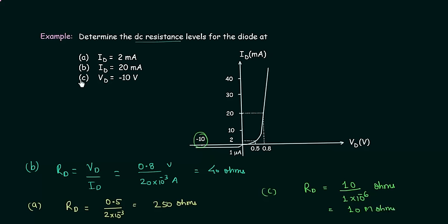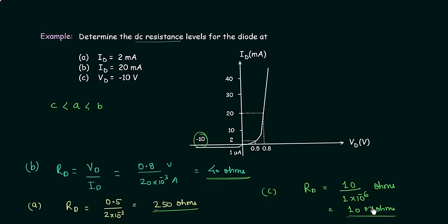Now we will compare the three cases, arranged with increasing diode current. Diode current is minimum in reverse bias condition, so case C has the minimum current, then case A with 2mA, and finally case B with 20mA. Arranging the DC resistance: for case B it is 40 ohms, for case A it is 250 ohms, and for case C it is 10 megaohms — a very high resistance. So as diode current increases, DC resistance decreases.